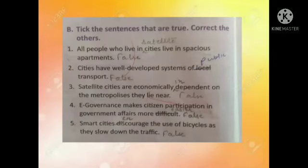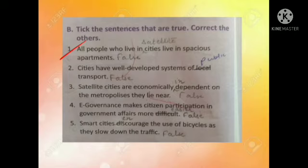First one: all people who live in cities live in spacious apartments. This sentence is false. The corrected sentence is: all people who live in satellite cities live in spacious apartments. Now this sentence is true.